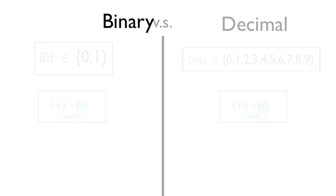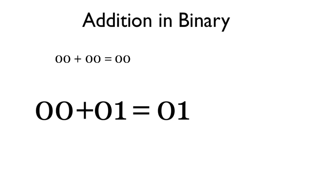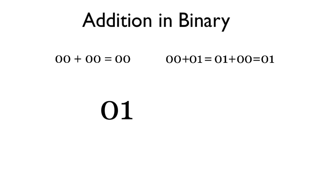The rules of addition in binary are the following: 0 plus 0 equals 0, 0 plus 1 equals 1 plus 0 equals 1, and 1 plus 1 equals 10.